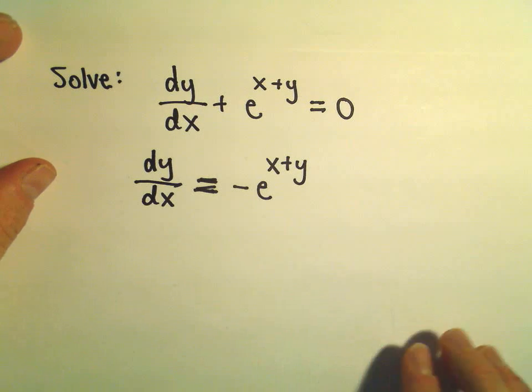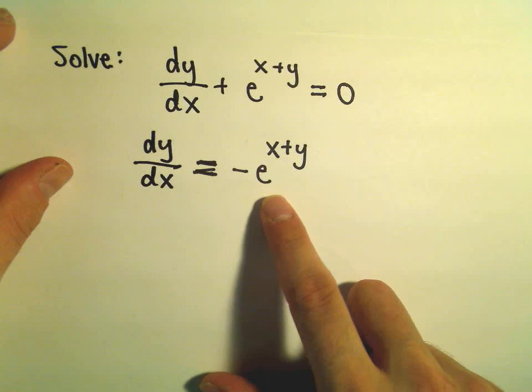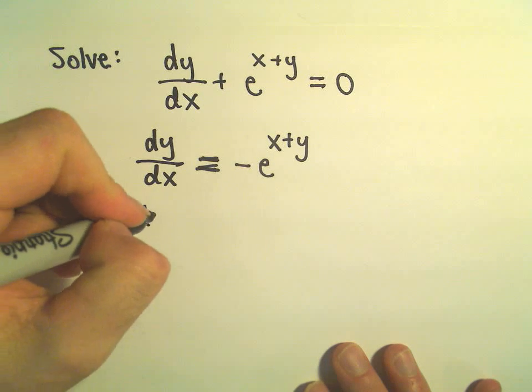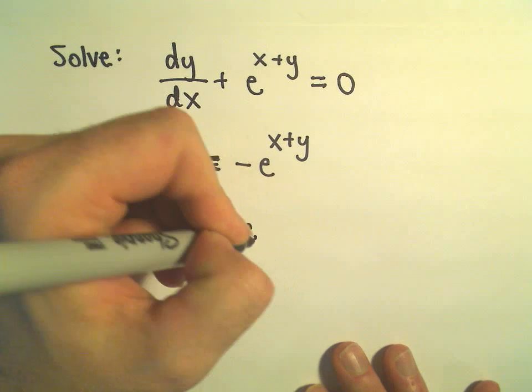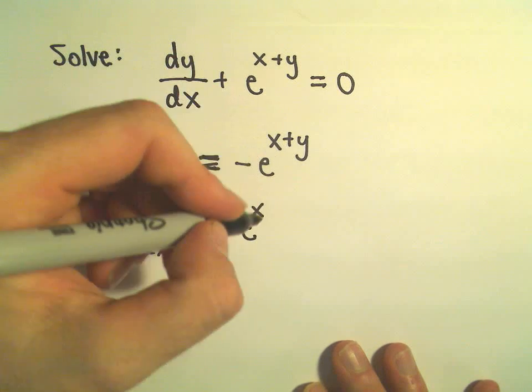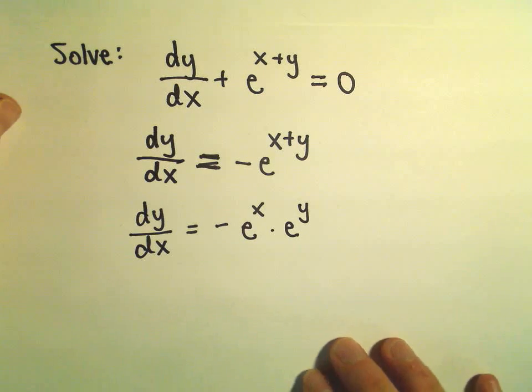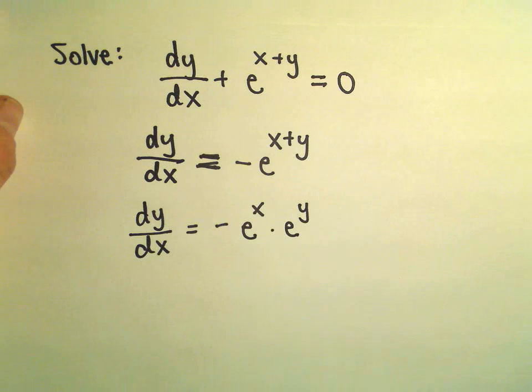Somehow we have to get all the y's on one side, so we're going to have to break this thing up. The way that we're going to sort of break it up so that we can move things around is, I could write e to the x plus y as e to the x times e to the y. If we have like bases, we would add the exponents and we would get e to the x plus y right back.